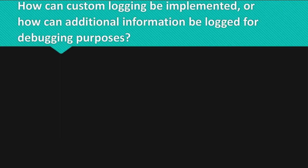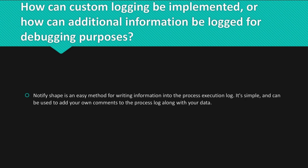Question: How can custom logging be implemented, or how can additional information be logged for debugging purposes? Answer: NotifyShape is an easy method for writing information into the process execution log. It's simple and can be used to add your own comments to the process log along with your data.